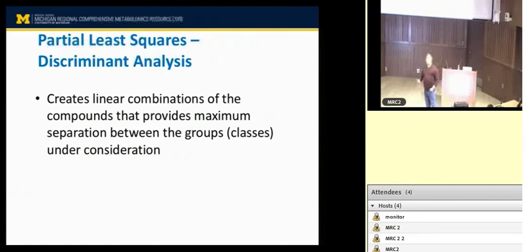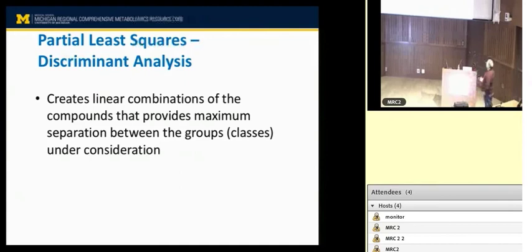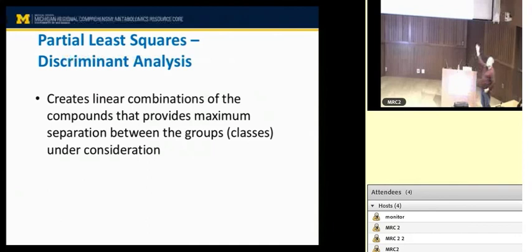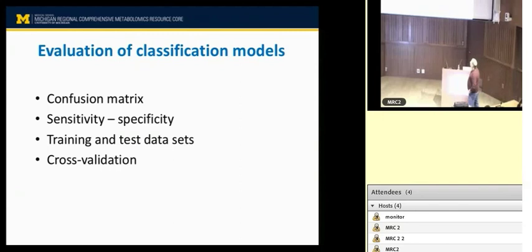PLS-DA is another very powerful technique that takes linear combinations. Instead of trying to get a weighted combination of metabolites to identify directions of maximum variability — as in PCA — it takes a different weighted combination that tries to separate the underlying classes as much as possible. So different techniques use weighted combinations of your variables, but the weights serve different purposes: in PLS-DA, weights give maximum separation, whereas in PCA, weights capture maximum variability.